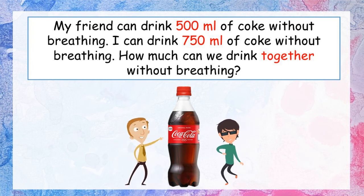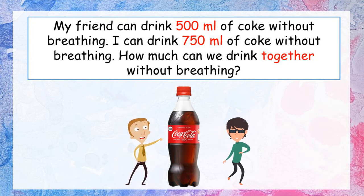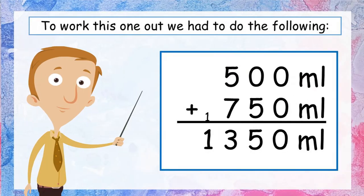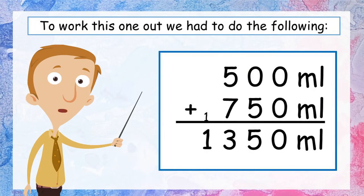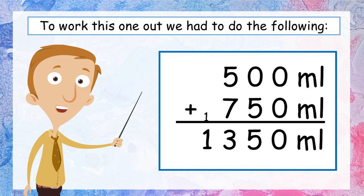We changed it into a sum: my 750 mils and my friend's 500 mils — we add them together and get 1,350 millilitres. Give yourself a tick if you got it and let's go on to the next one.